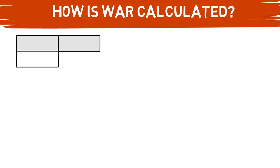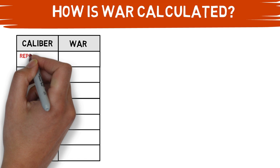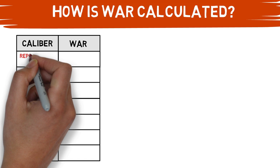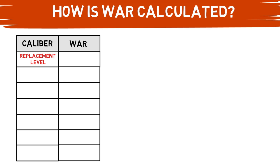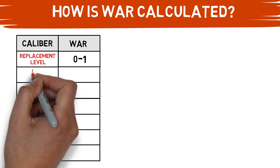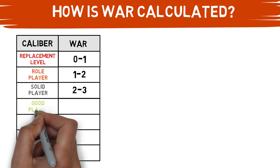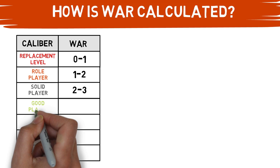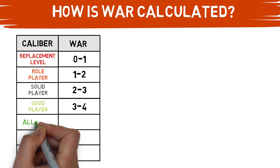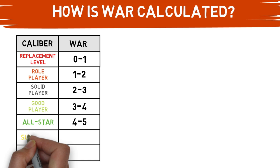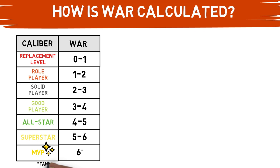Before we draw out the equation for WAR, let's look at this chart to explain where players rank based on their WAR. The baseline is comparing wins contributed against a replacement level player, who will have a WAR between zero and one. Role players — defensive specialists, platoon players, pinch hitters — range from one to two. Solid players fall between two and three, above-average players three to four, all-stars four to five, superstars five to six, and MVP candidates above six. It's remarkable that a single player can contribute over six wins in a single season.